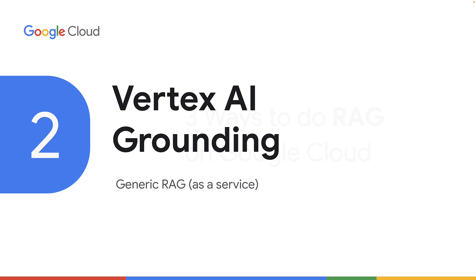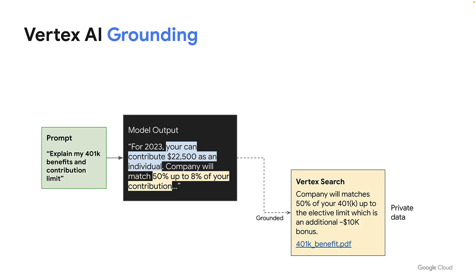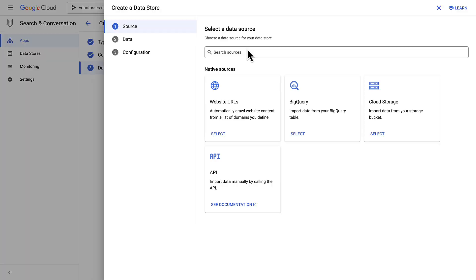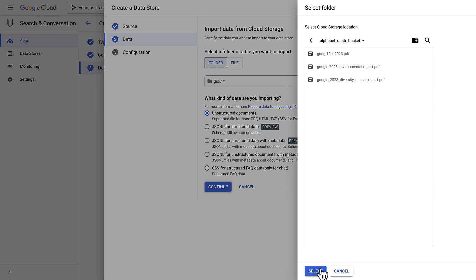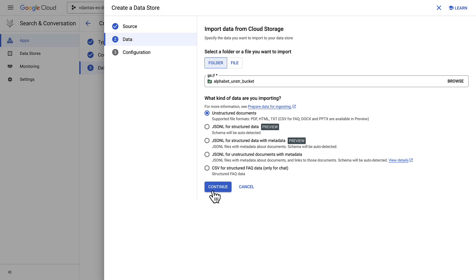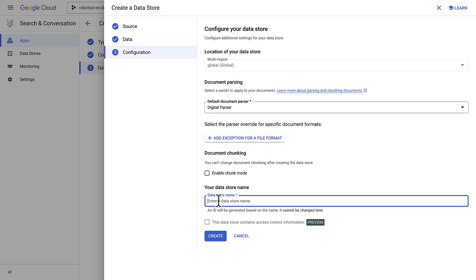The second option for doing RAG on Google Cloud is Vertex AI Grounding. This is a more generic RAG product. The idea is to simply give you a way to ground the responses of a model in your private data. You first need to create a data store in Vertex AI Search — note, you don't need to actually create a search app, only the data store.